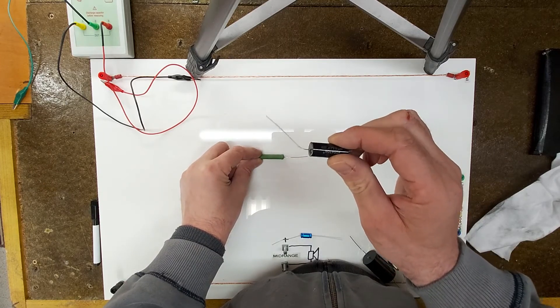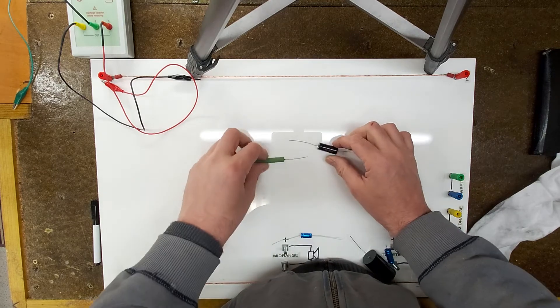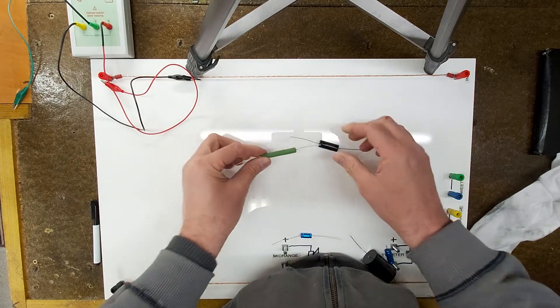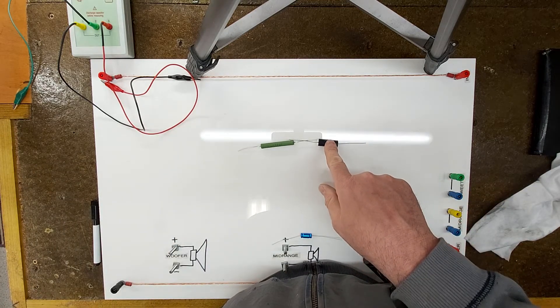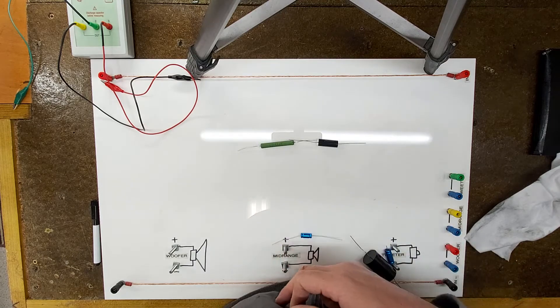So really you've got to weigh this up. Either the speaker should originally be voiced with the polypropylene cap and these resistance values taken into account, or you start introducing resistors. Yeah, really it's better to start the design with these in the first place rather than retrofit them afterwards because you may run into this problem.